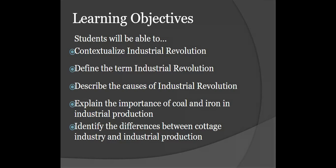Pause on this screen, make sure you have collected these objectives and you will know you are successful at the end of this presentation if you can contextualize the Industrial Revolution, define the term Industrial Revolution, describe the causes of the Industrial Revolution, explain the importance of coal and iron in industrial production, and identify the differences between the cottage industry and industrial production.